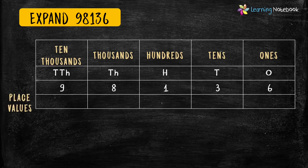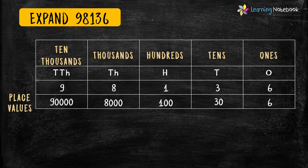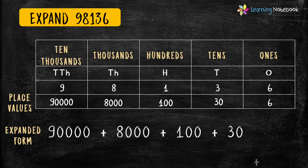The place value of 6 is 6. The place value of 3 is 30. The place value of 1 is 100. The place value of 8 is 8,000. And the place value of 9 is 90,000. Now students, let's write the expanded form: 90,000 plus 8,000 plus 100 plus 30 plus 6.